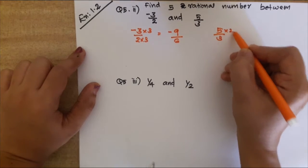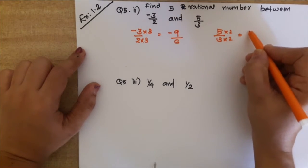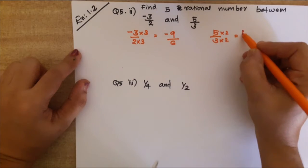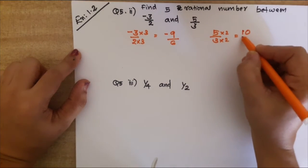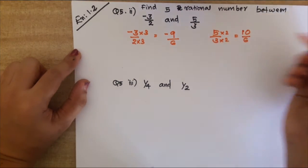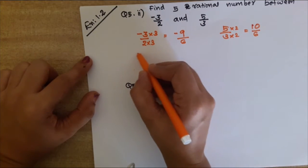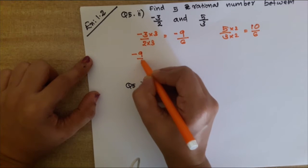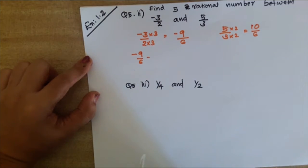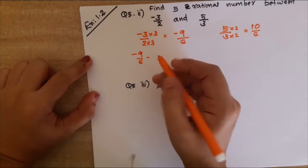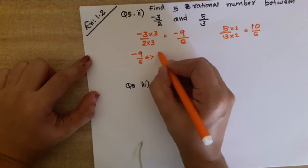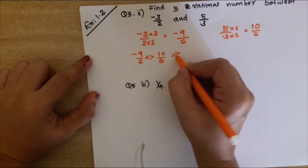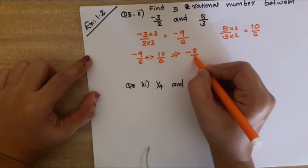For 5/3, we multiply by 2 to get 10/6. Now we can write the five numbers between -9/6 and 10/6.